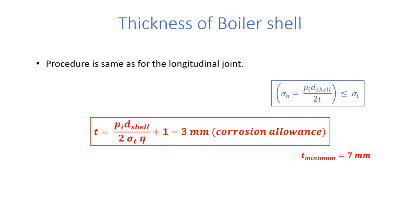The thickness of the boiler shell procedure is the same as for the longitudinal joint. We design for hoop stress: calculate σ_h = P_i × D / 2T and ensure it is less than allowable tensile strength. Rearranging, T = P_i × D_shell / (2 × σ_T_allowable × η), where η is the efficiency of the butt joint. Butt joints have usually high efficiencies. Then 1 to 3 mm allowance is added for corrosion. According to Indian boiler regulations, minimum thickness should be 7 mm.